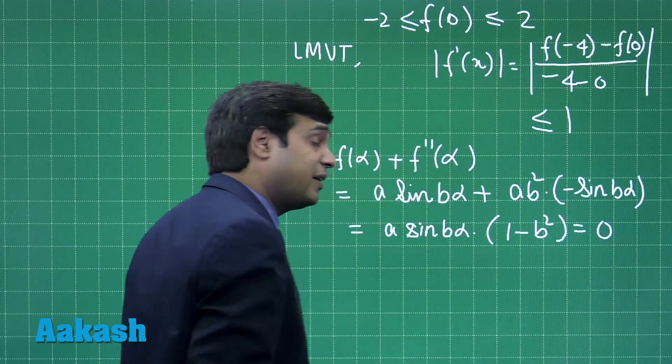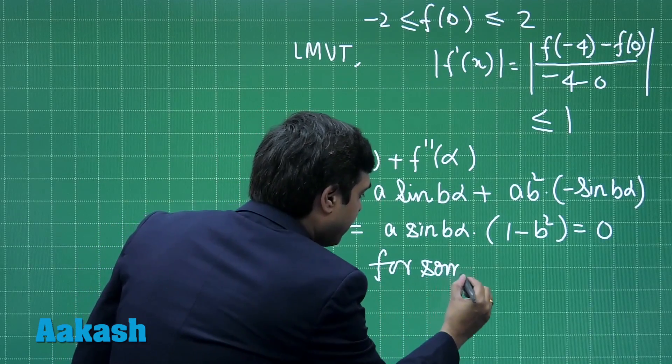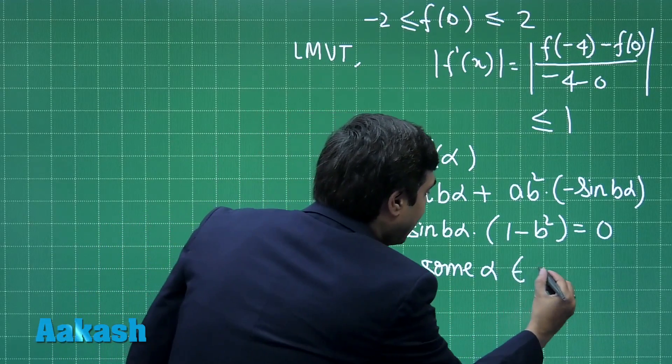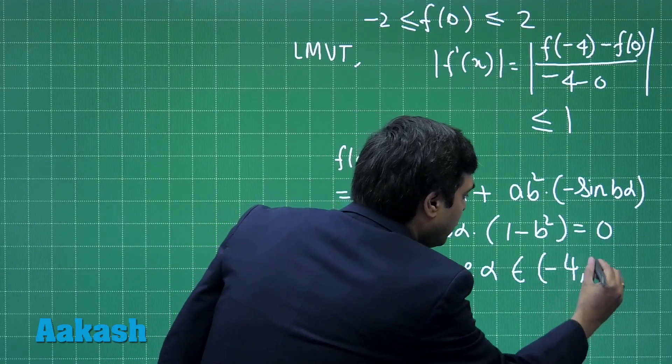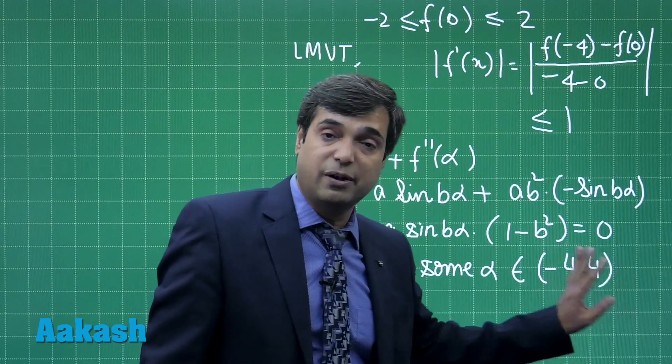This will definitely be 0 for some α in the interval minus 4 to 4 because sin(bα) will become 0 for some value in the interval minus 4 to 4.